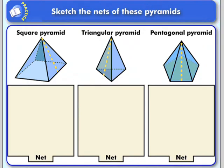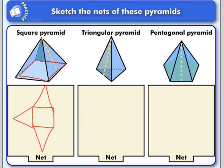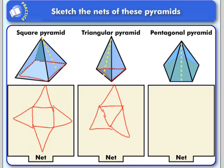Here I'm going to sketch some nets of different pyramids, starting with the square pyramid. I always like to start with the base, so I'm going to start with our square base, and then imagine that unfolding. I'll do the lateral faces — and the lateral faces on all pyramids are triangles. Now let me do a triangular pyramid: start with the triangular base, then draw my three lateral faces. These are just quick sketches.